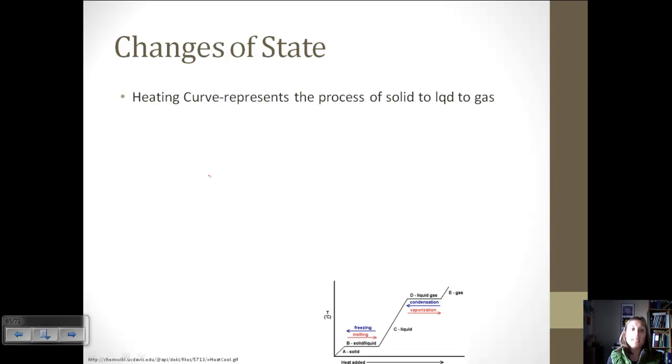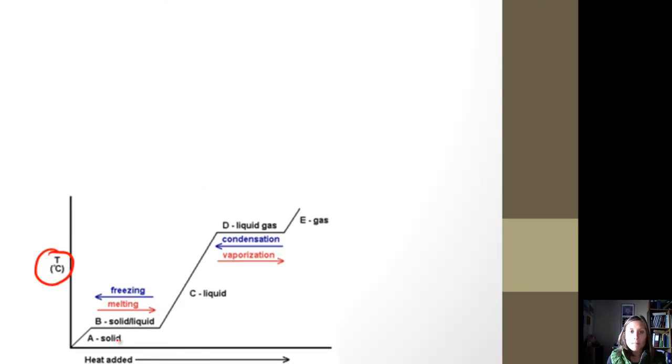We can draw what's called a heating curve to represent that process of going from a solid to a liquid to a gas. Basically, we are plotting temperature versus time. We are adding heat over the course of time. Look at what happens as we go from a solid to a liquid to a gas.